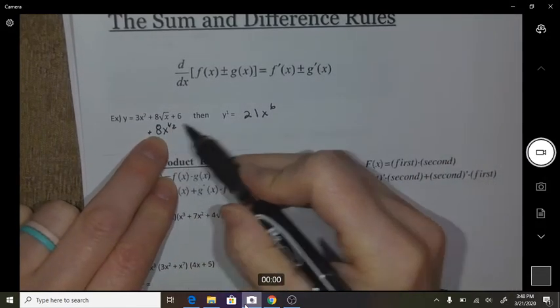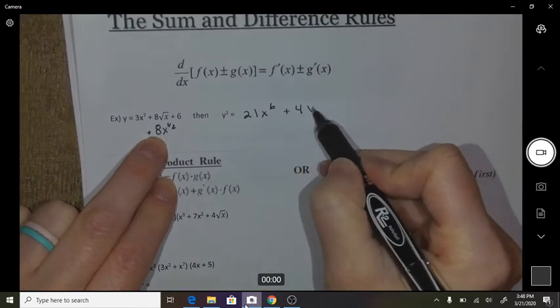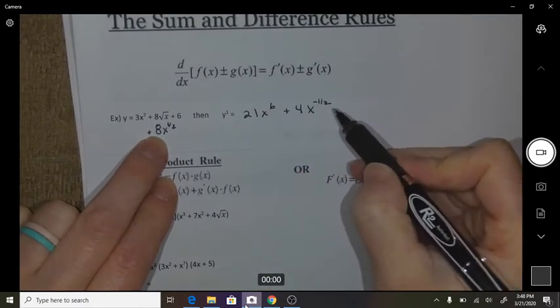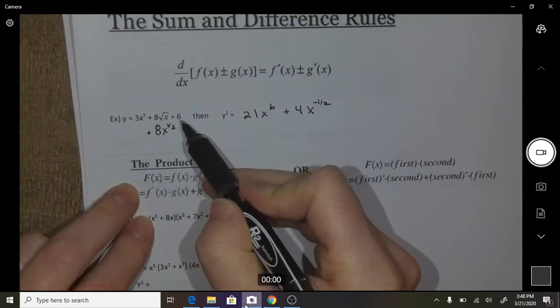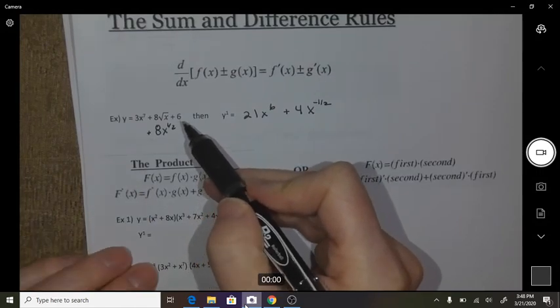So now when I derive that one, it's plus 4x to the negative 1 half, and then the derivative of 6 is a constant. The derivative of it is 0.